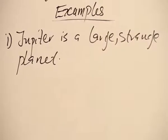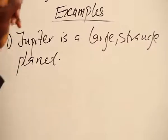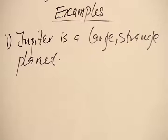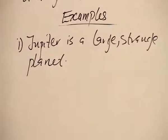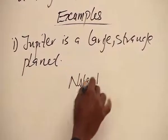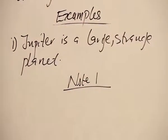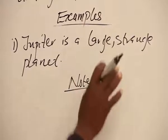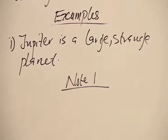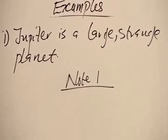Jupiter is a large, strange planet. Now, to illustrate the fact that we use the comma to separate two or more adjectives coming immediately before a noun, we must note something here. And that is the fact that although we can use the comma to separate the two adjectives coming before a noun,